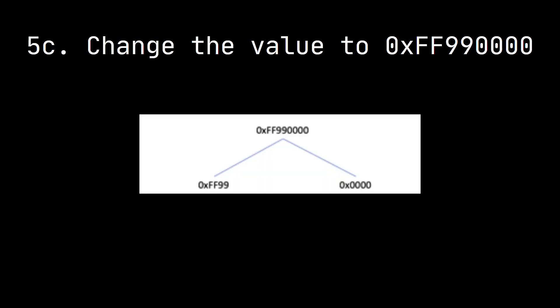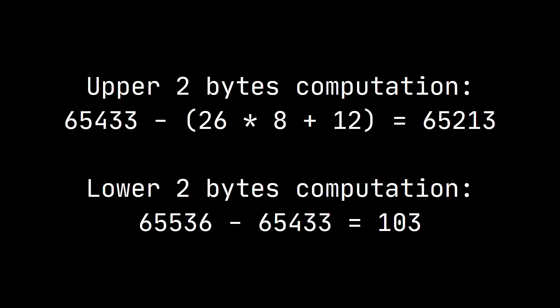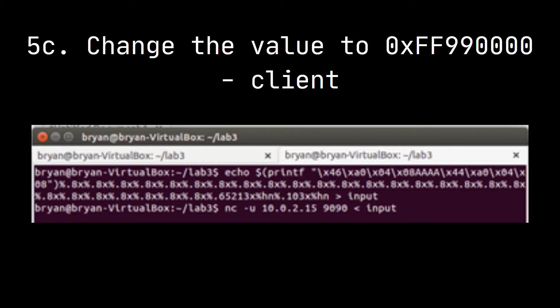For task 5c, we had to change the value to 0xff990000, which is a large number. We divided it into two blocks — upper two bytes and lower two bytes respectively. The upper two bytes computation gave 65213, and the lower bytes computation gave 103. Here is the client view.